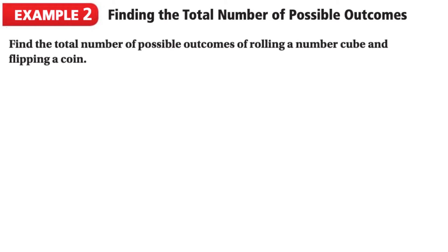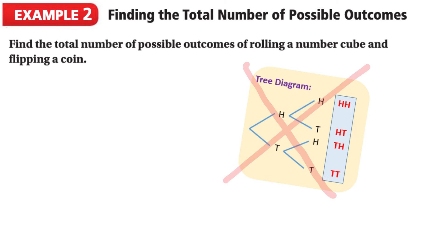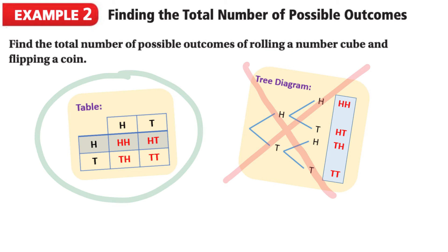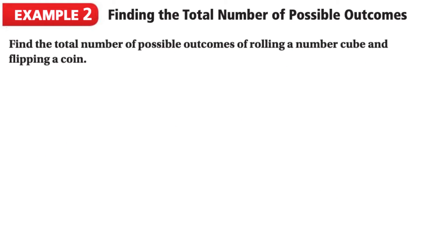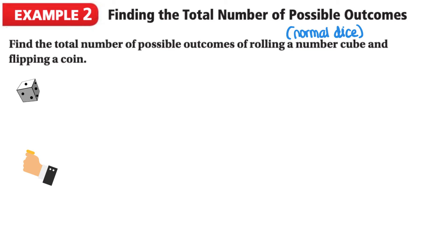In our second example, we're going to be finding the sample space to help us determine the total number of possible outcomes. Unlike the last example, instead of a tree diagram, we're going to use a table. The question says: find the total number of possible outcomes of rolling a number cube — so a regular dice — and flipping a coin.